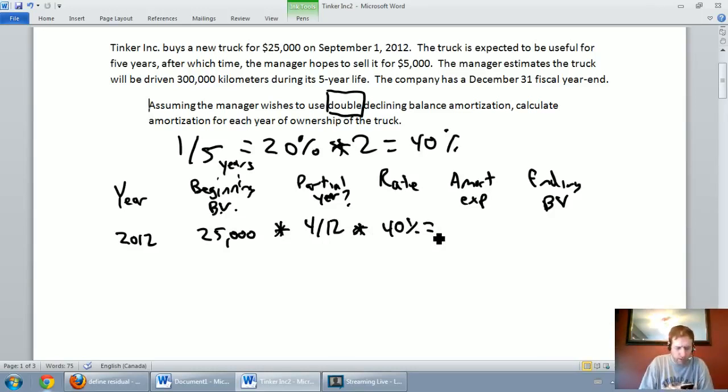Let's crunch that number. 25,000 times 4 divided by 12 times .4, 40%. And I get the number 3333. Now I've got to say, after I've done that, what's the value of my asset according to my records? The value of my asset according to my records is the 25 grand I paid for it minus the 3333 I've amortized off of it. 25 minus 3333 is 21667. So, 2012 is in the bag.